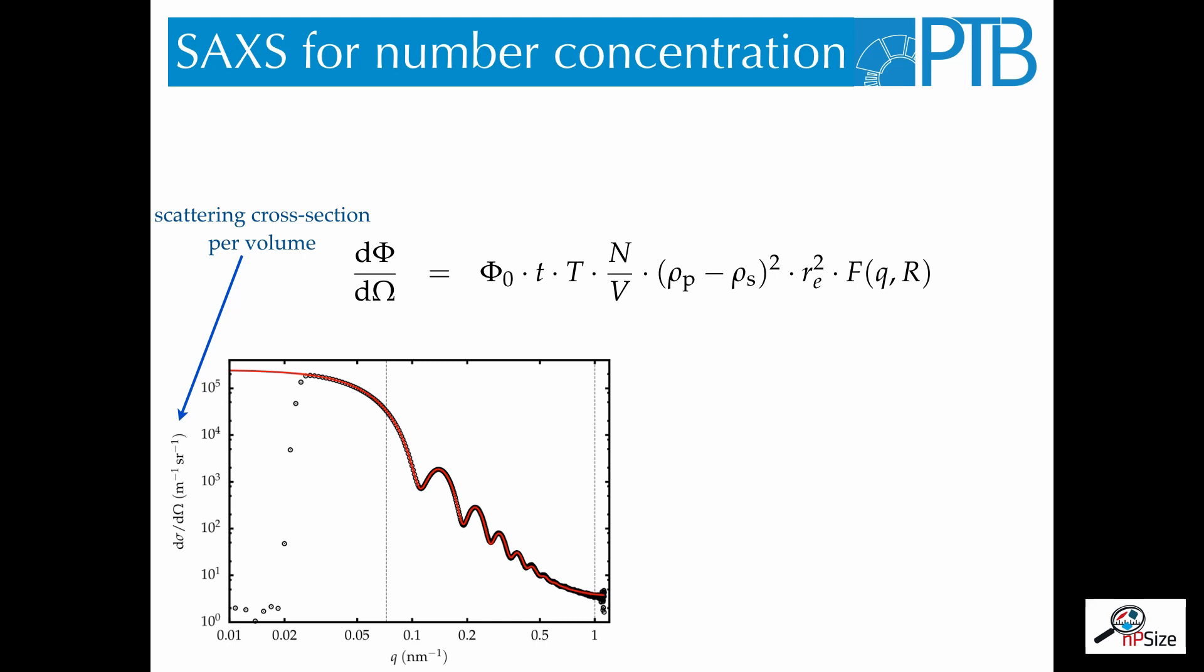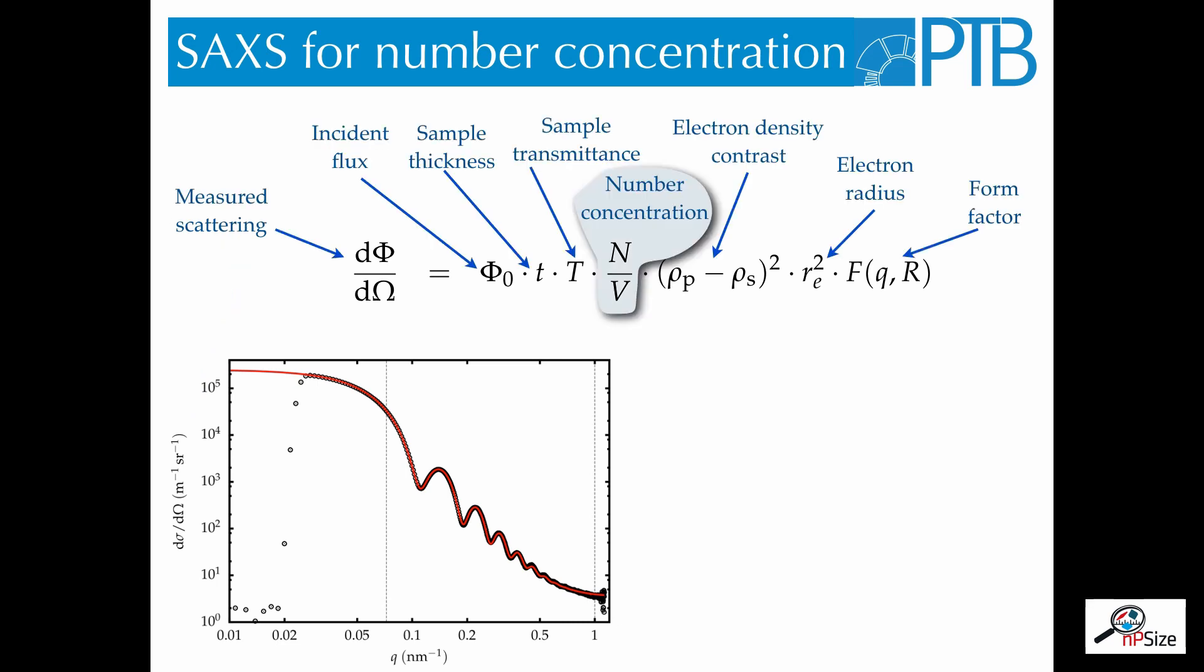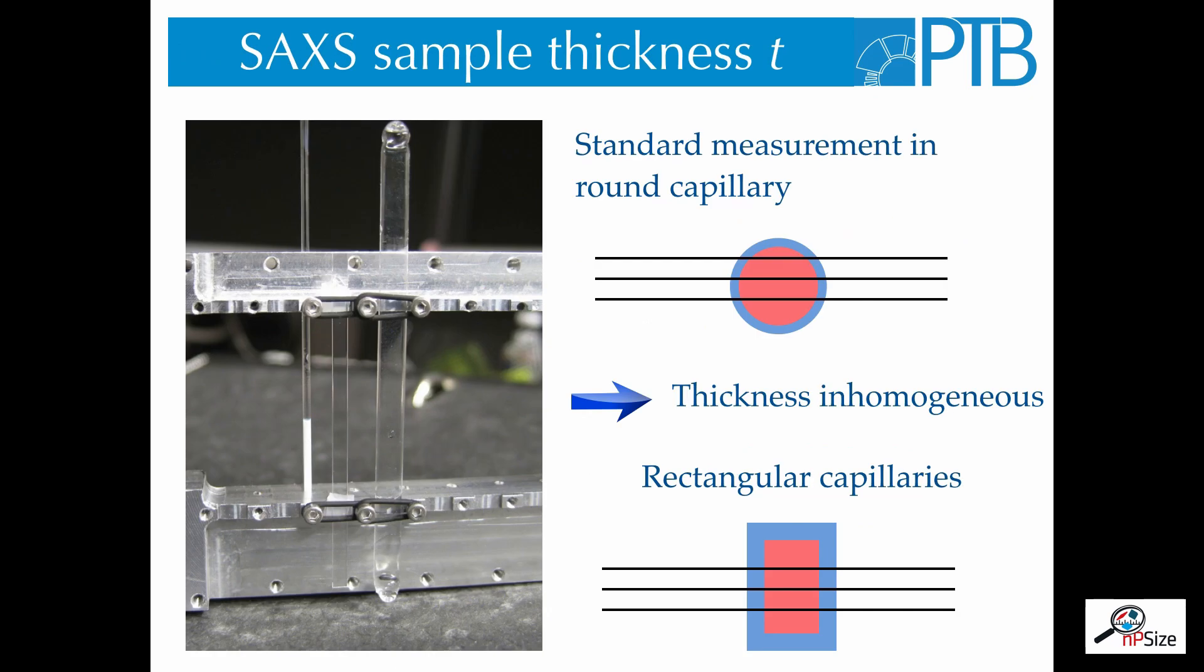In the equation on top, you can see how the measured intensity, which is the scattered photon flux per solid angle, relates to the number concentration via a number of factors. Some of these factors are natural constants, others are known or can easily be measured, but there are also two of them which can only be determined with large uncertainties. These are the sample thickness and the electron density contrast.